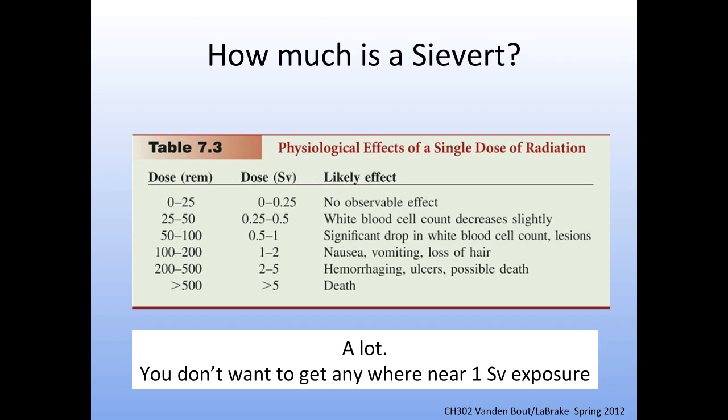At a dose of a quarter to half a sievert, your white blood cell count would decrease slightly. At half a sievert to one sievert, you'd see a significant drop in white blood cell activity, and you'd start to see burns or lesions. At one to two sieverts, your hair would fall out, you'd start vomiting, and there would be problems with internal organs.